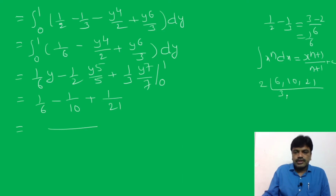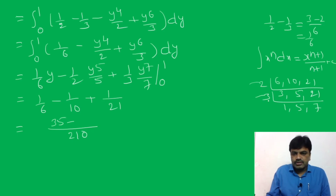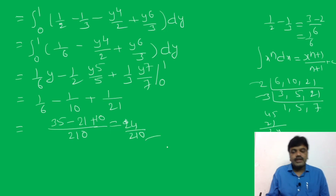Substituting the upper limit, we get 1 by 6 minus 1 by 10 plus 1 by 21. Substituting the lower limit, all values are 0. Now find LCM of 6, 10, and 21. LCM is 2 times 3 times 5 times 7 equals 210. So we get 35 minus 21 plus 10 all over 210, which equals 24 by 210. Simplifying gives the final value of the given problem.